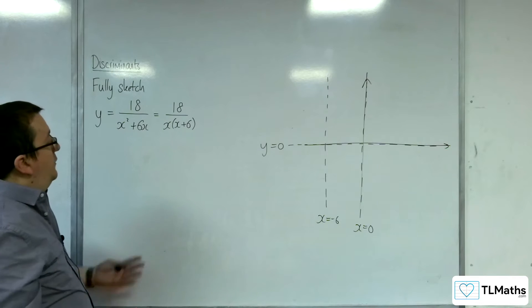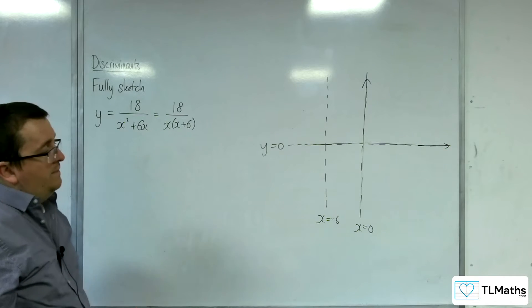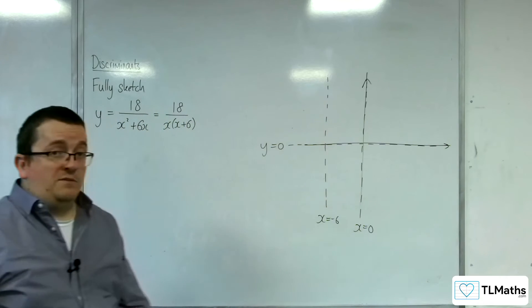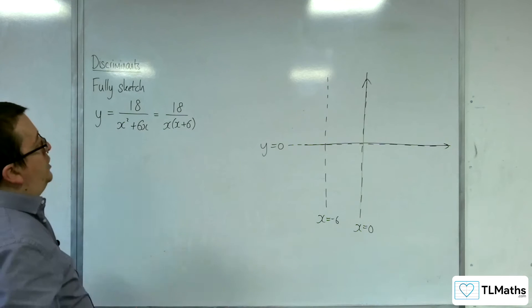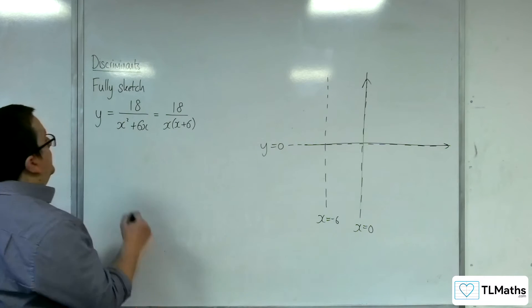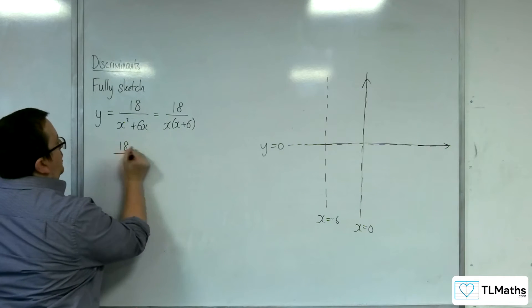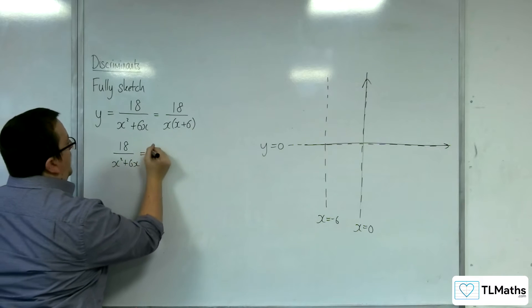It doesn't cross the y-axis either, because that's a vertical asymptote. So next up is working out where its stationary points are. I'm going to put 18 over x-squared plus 6x equal to k.